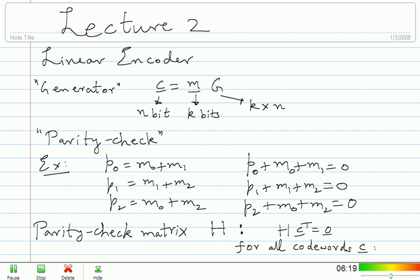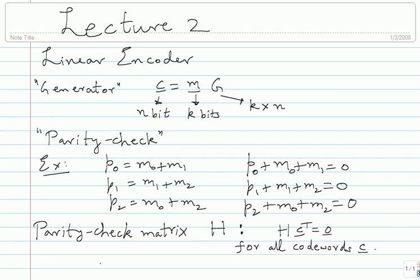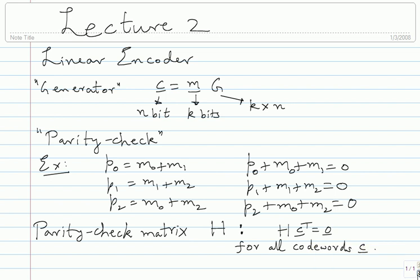What can you say about H? H should have how many columns? Just because I am able to multiply with C transpose on the right, it should have definitely N columns — that's the only thing I can say right now. I cannot say anything about the rows yet. For this example, it is very easy to construct that matrix. I want some matrix on the left which will multiply my codeword: M0, M1, M2, P0, P1, P2 transposed, and I should get a zero vector.